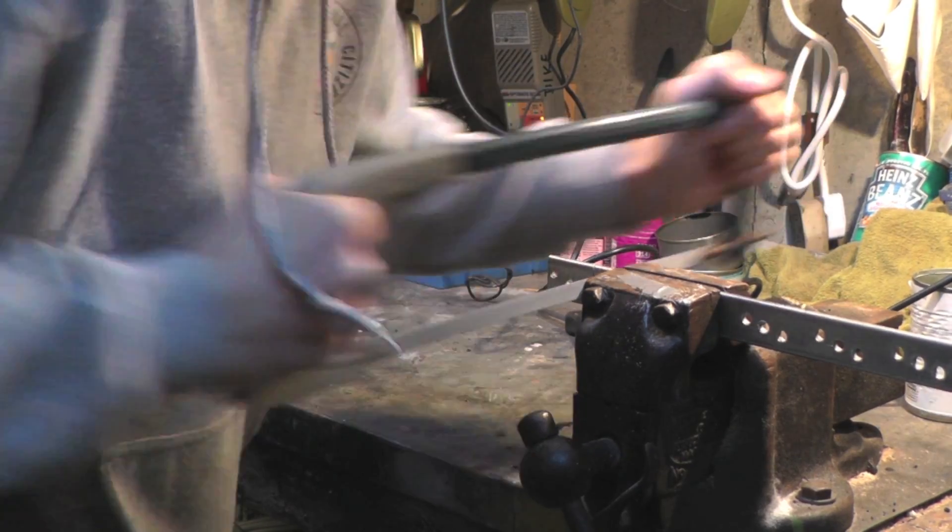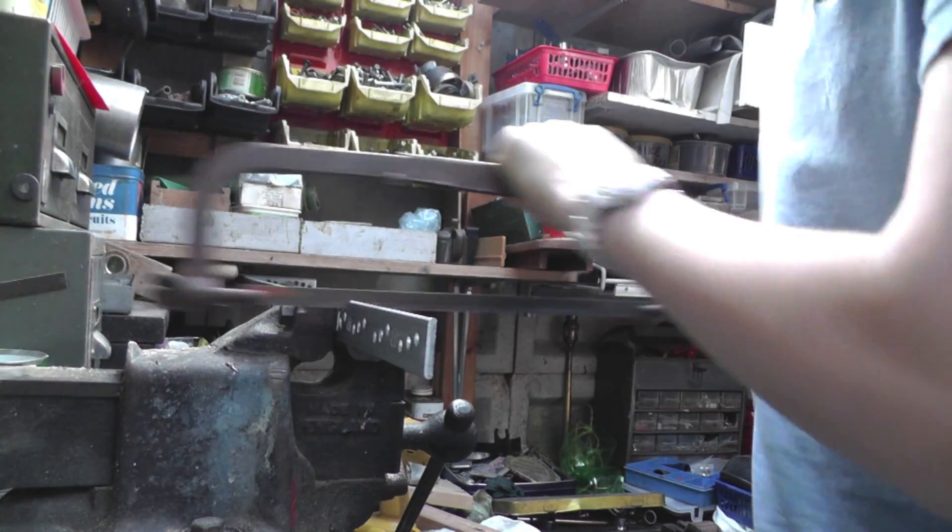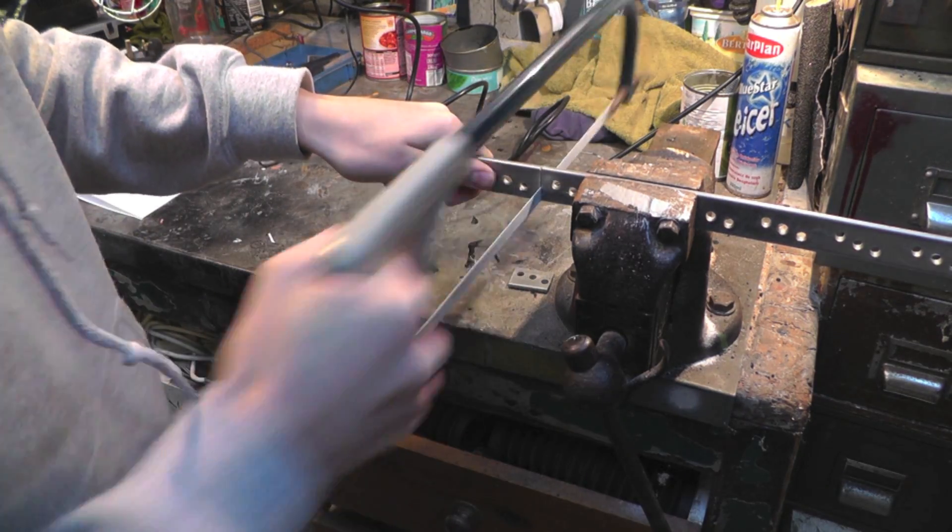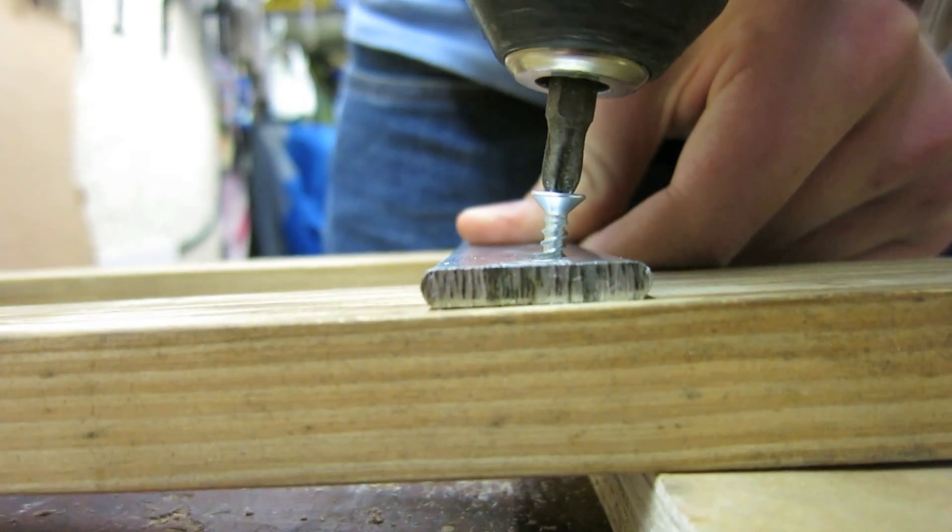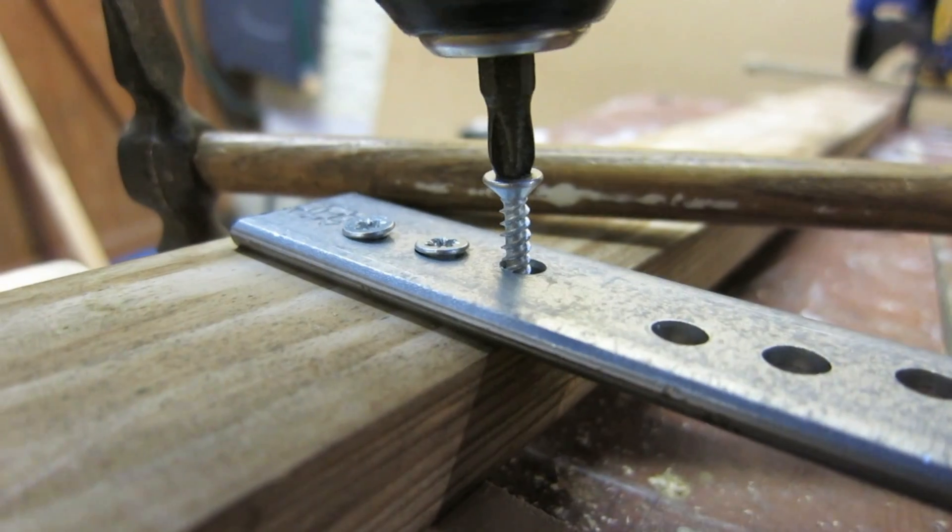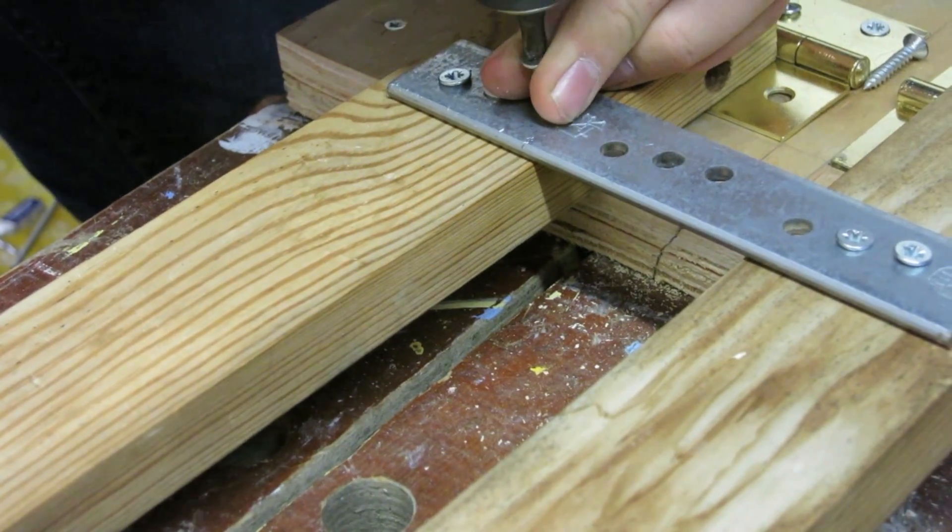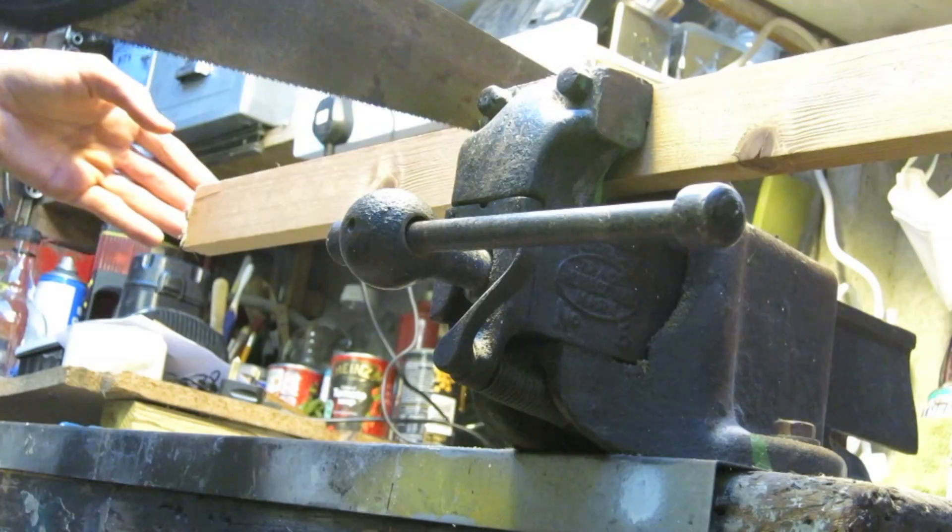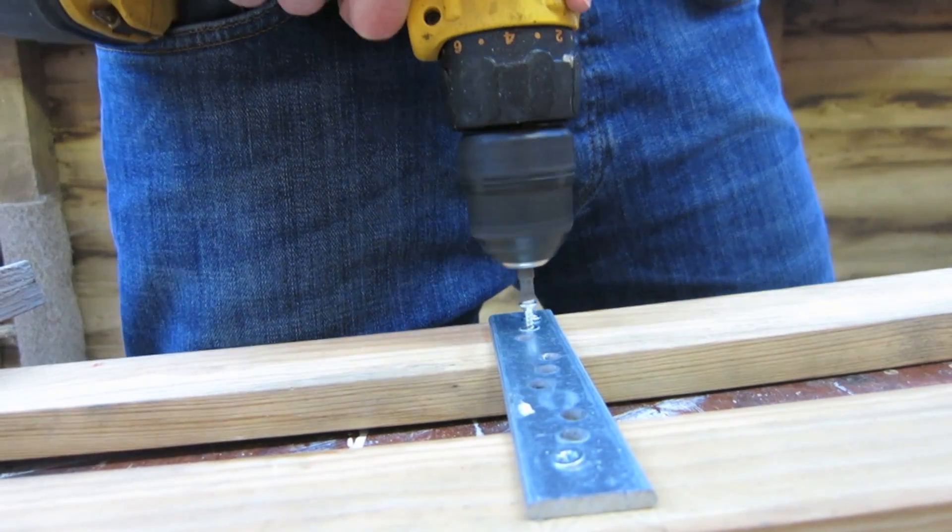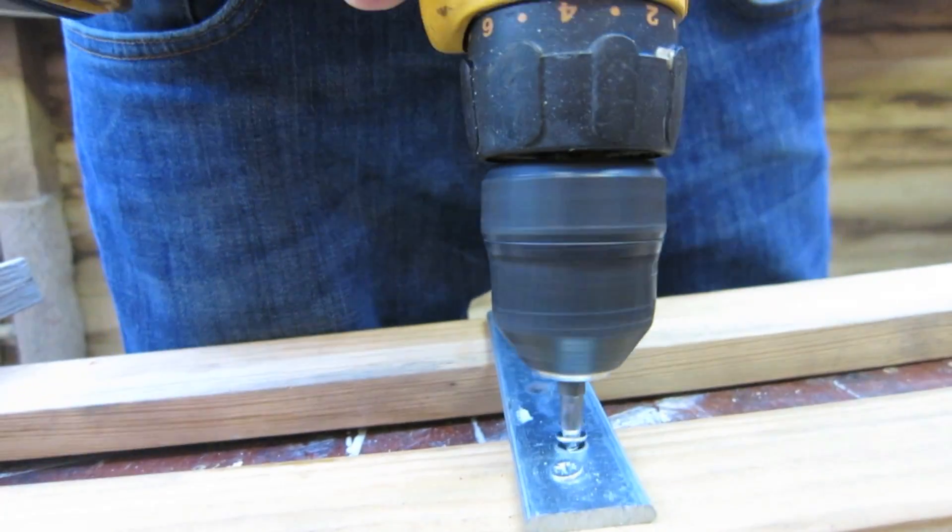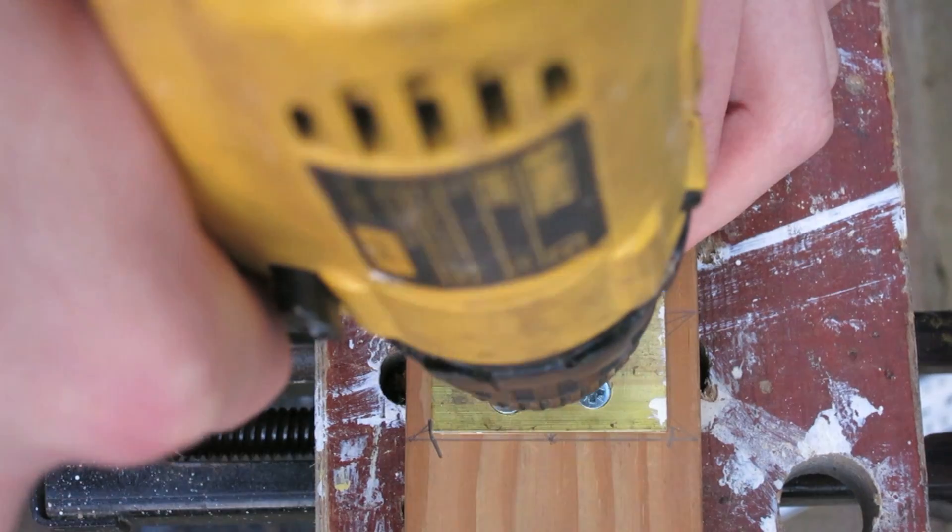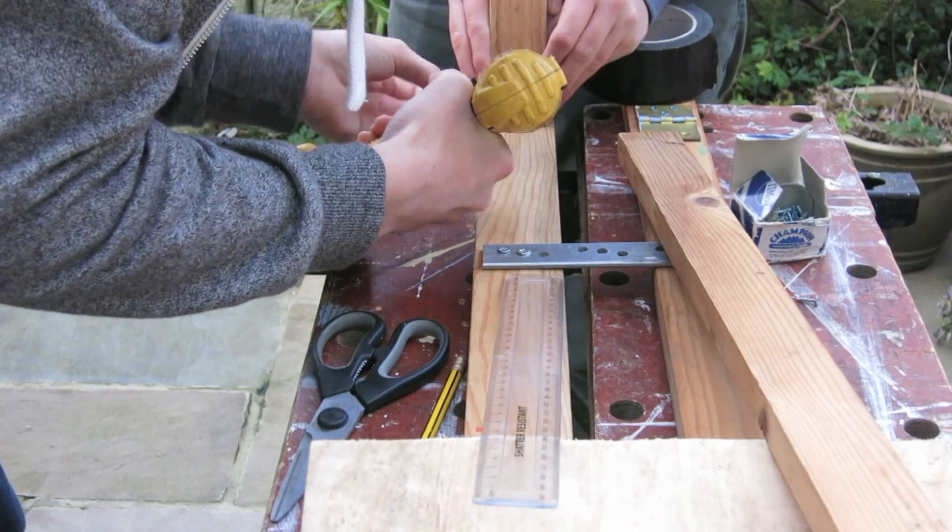Using a hacksaw, we cut multiple metal supports. Using a drill, we then attached more hinges and fixed the legs in place.